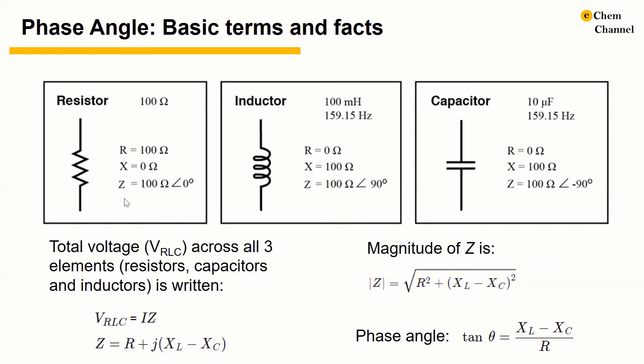For a perfect resistor, the voltage drop and current are always in phase with each other. So the impedance angle of the resistor is said to be 0 degrees.